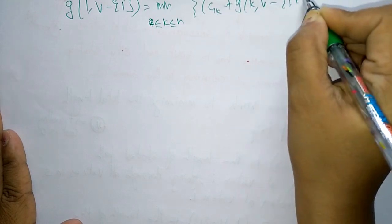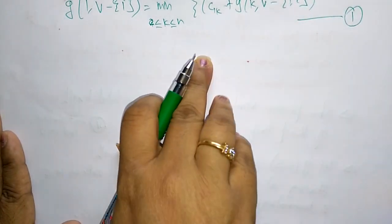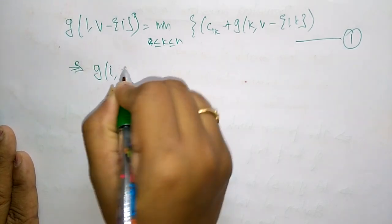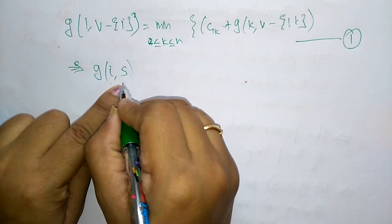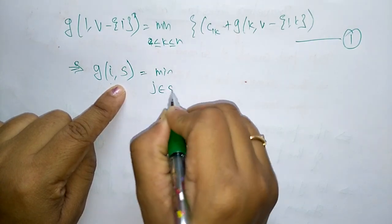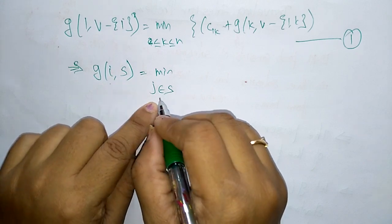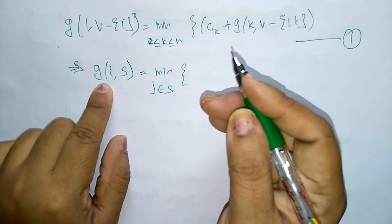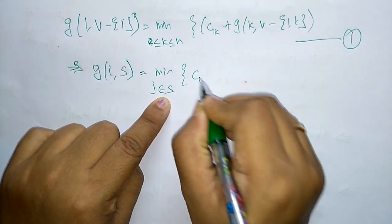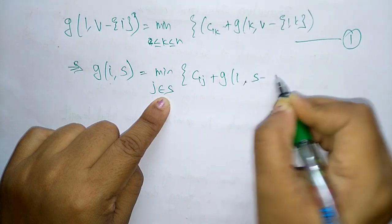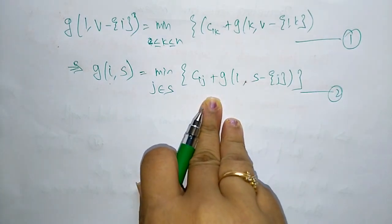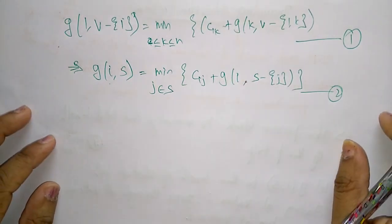By generalizing the equation, we get: G(i, S), where i is a starting vertex and S contains the set of cities, is equal to the minimum over j belonging to S of c_ij plus G(j, S minus {j}). Here i is the starting city and j is any other city in the set. This is the generalized equation for finding the length of the path starting from the vertex.